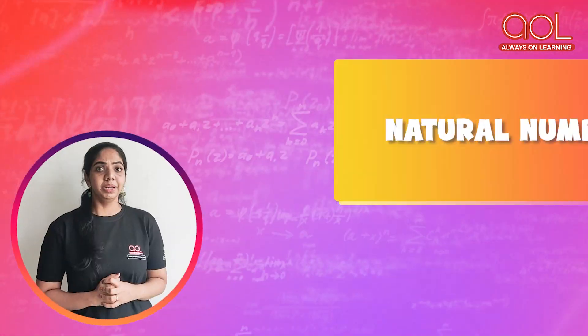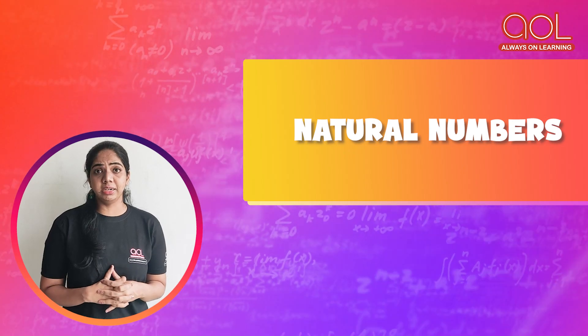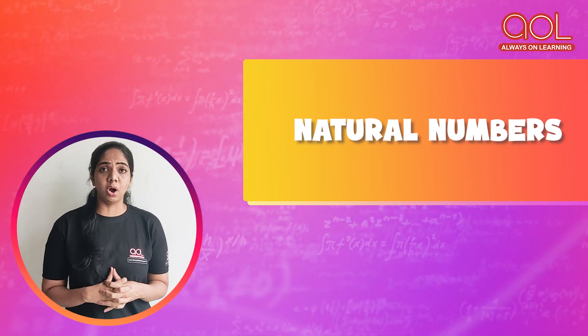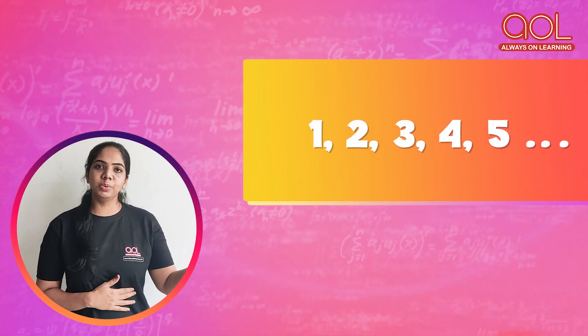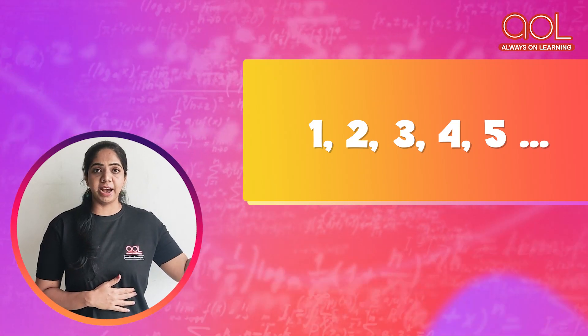But before going into that, let us see some other basic concepts like what are natural numbers? From the time we started counting, we have been counting objects like 1, 2, 3, 4, and 5. These are your natural numbers.